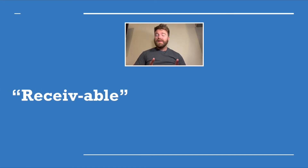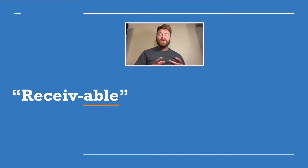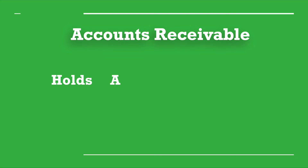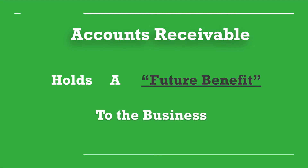Now remember, you're owed $1,000 in rent by your tenant to be received at a later date. In accounting, we call this a receivable — meaning it has the potential to be received at a later date, hence why the word ends in '-ible.' Because you have the potential, but it's not guaranteed that you will receive that cash. A receivable is considered an asset because it has the potential to be received in a future date, because it holds a future benefit to the business.